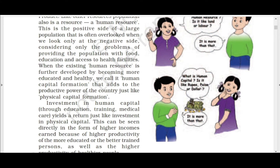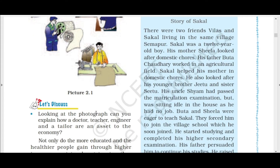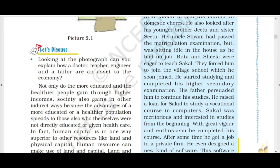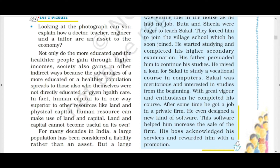A doctor, a teacher, a plumber, a tailor — these are all assets to the economy. Not only do the more educated and healthier people gain through higher incomes, but society also gains indirectly, because the advantages of an educated or healthy population spread to those who were not directly educated or given health care.